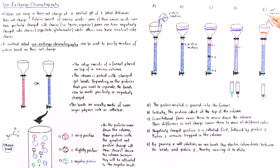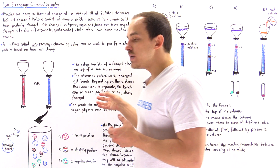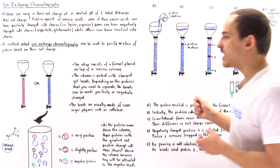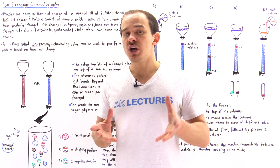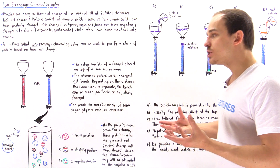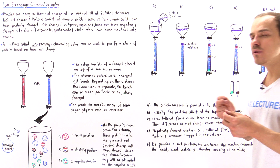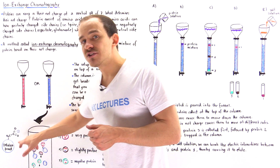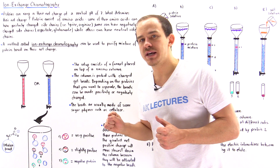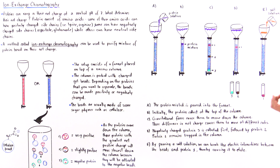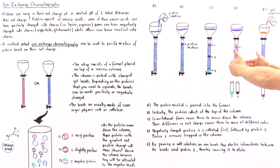The problem with protein one is that we would have to wait a very long time. To speed up the process, as shown in diagram E, we pour a salt solution — for example, sodium chloride — into the column. The sodium and chloride ions dissociate in solution, and the positively charged sodium ions interact with the negatively charged beads, disrupting the electric interactions between protein one and the beads. This allows gravity to overcome the electric force, and protein one begins to move down and eventually elutes so we can collect it in another test tube.